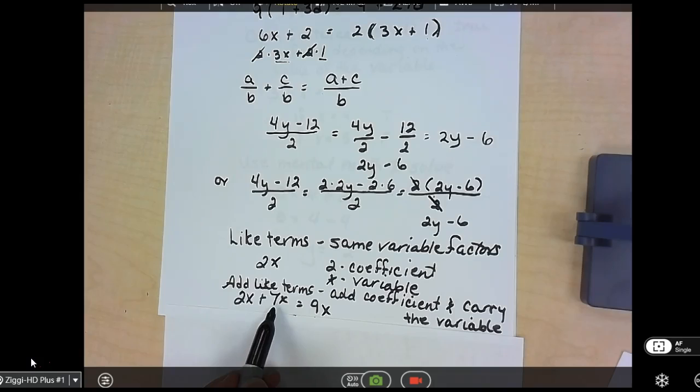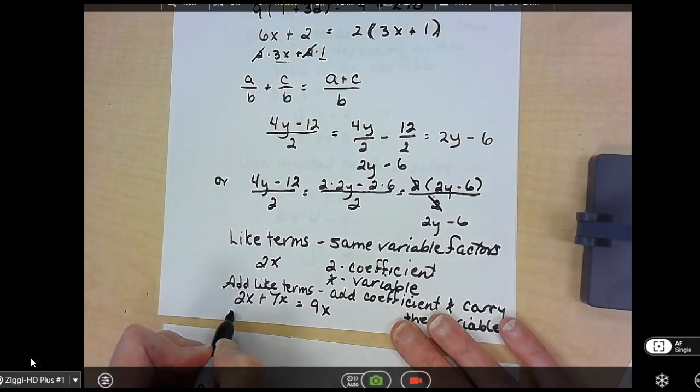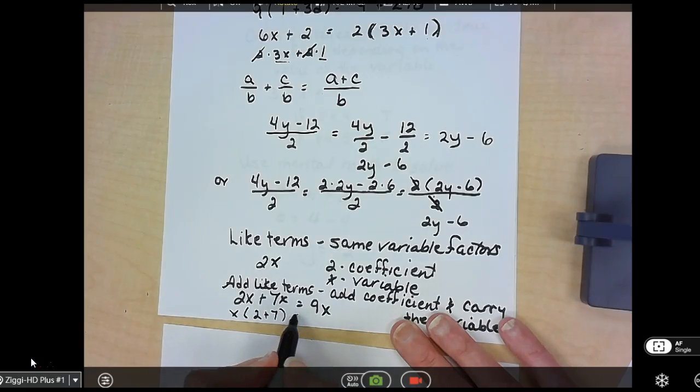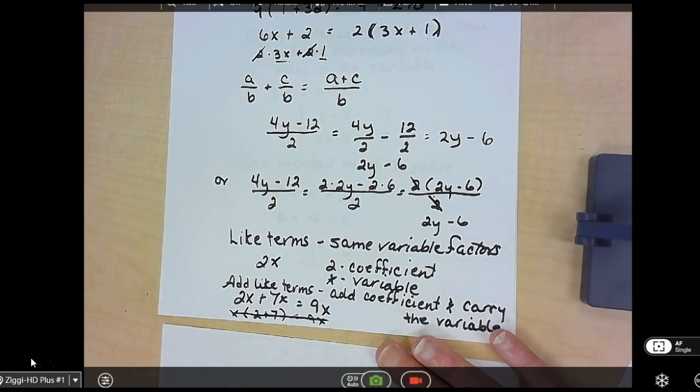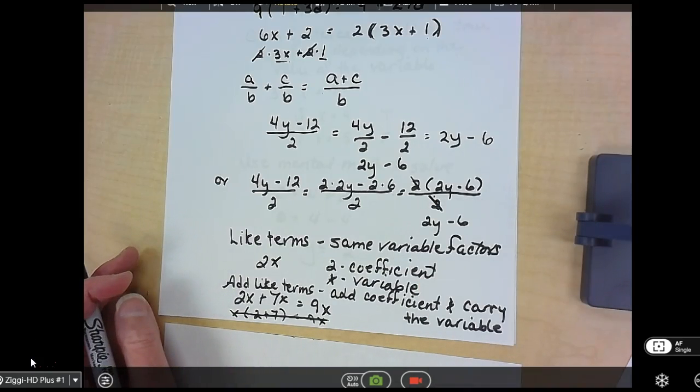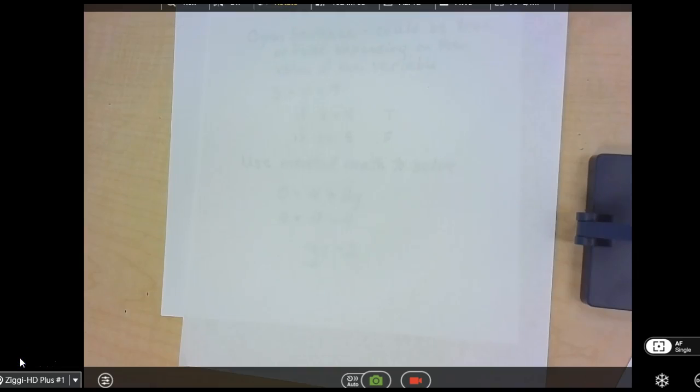So at 2X plus 7X, I go 2 plus 7 is 9. Carry the X. The book would like us to factor out the X and go 2 plus 7 and use the distributive property to then go 2 plus 7 is the 9X. You're kind of doing that, but you aren't writing anything official because you're just taking the 2 plus 7 and then writing the X next to it. You're doing that same process, but in a little easier terms. And that's all I have for 1-7.